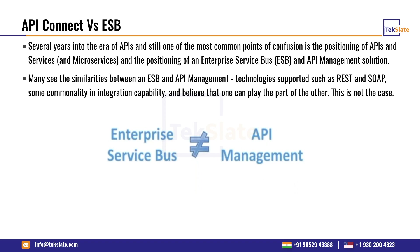In terms of data formats, IBM API Connect mostly handles XML and JSON (key-value pair formats), whereas ESBs widely support XML, JSON, CSV, flat files, and other delimited text formats. This is why you cannot compare API management products to Enterprise Service Buses — they serve different purposes.